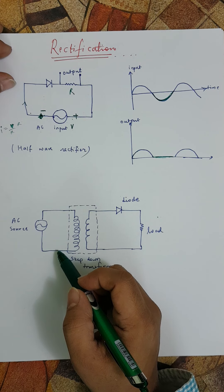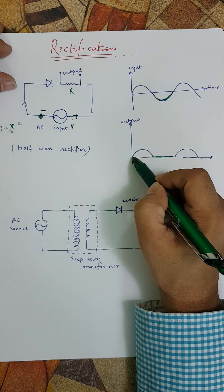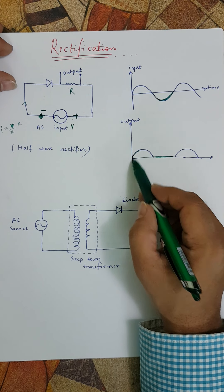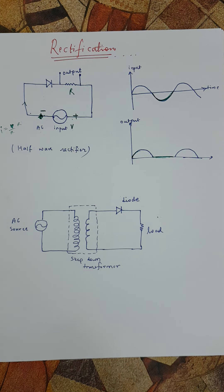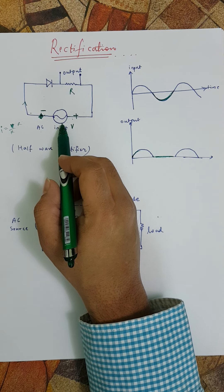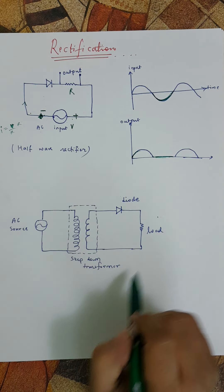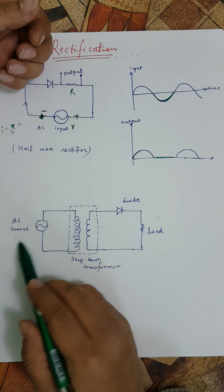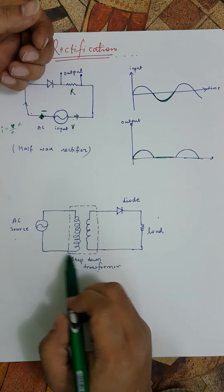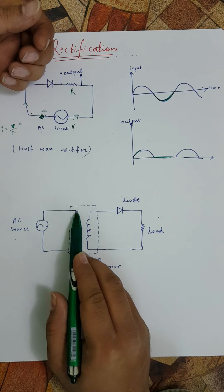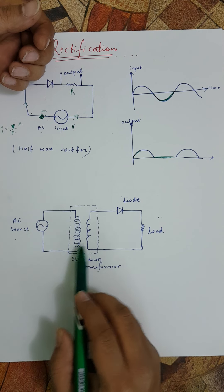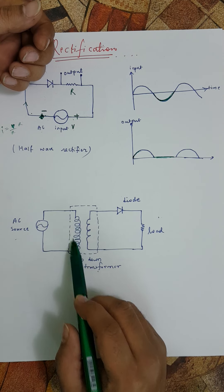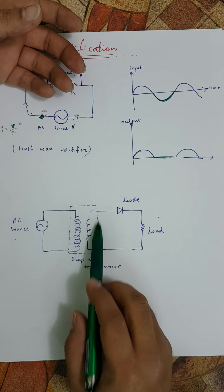What we have done is called rectification. Rectification means converting AC into DC — instead of having positive half cycle, negative half, positive half, negative half, we are having only unidirectional flow. Now, instead of having a simple AC source, what is given in your textbook is a step-down transformer. This is the original power station; voltages are stepped up to avoid transmission loss.